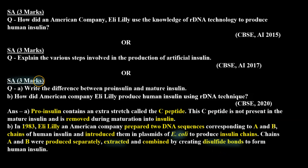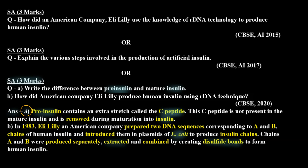Now, one part also asked us how proinsulin and insulin are different. Proinsulin has an extra stretch called the C peptide which has not been removed. So the formal answer for Part A is: proinsulin contains an extra stretch called the C peptide. This C peptide is not present in mature insulin and is removed during maturation into insulin.